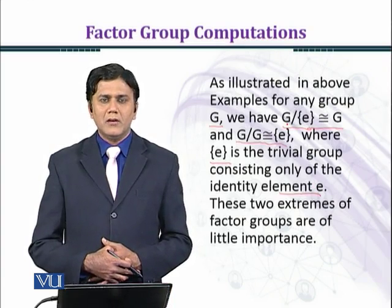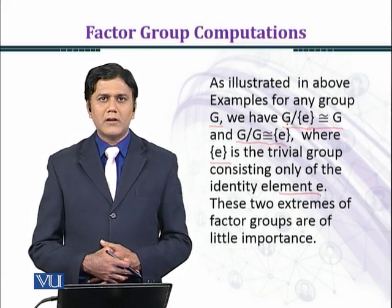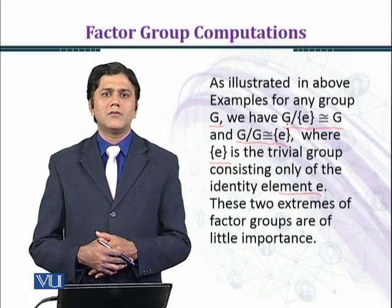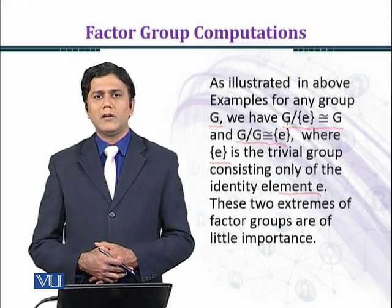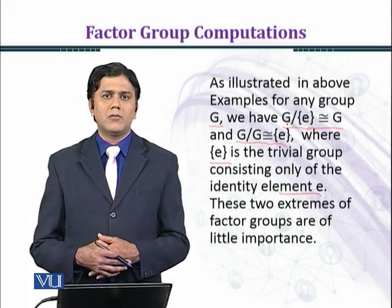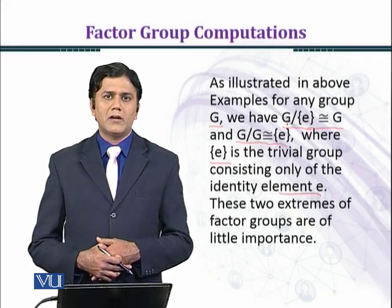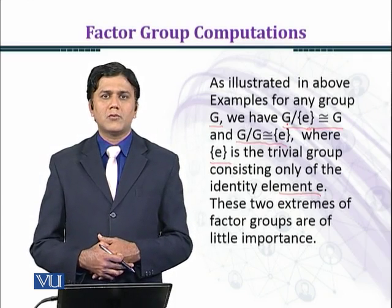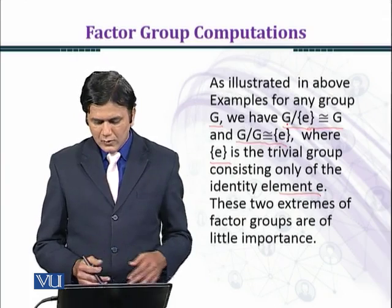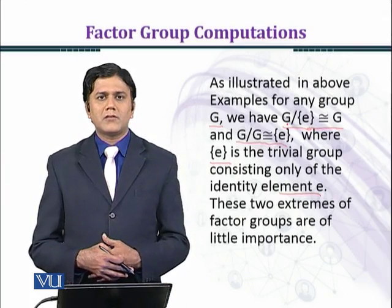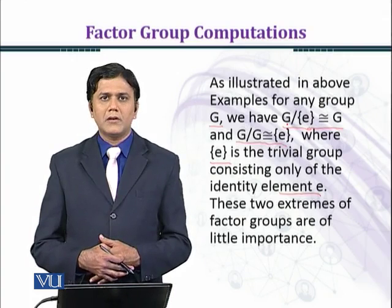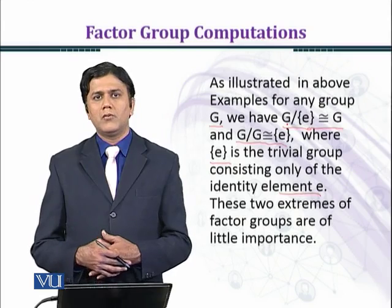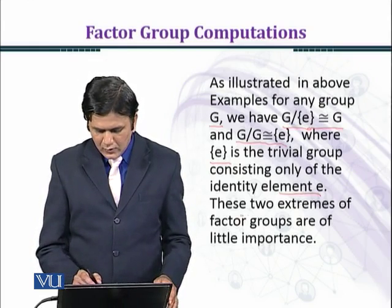جیسا کہ first example میں ہم نے دیکھا، set of integers کے اندر ہم singleton {0} کے ساتھ Z کا quotient لے رہے تھے اور ہر element جو ہے وہ co-sets کی form میں آ رہا تھا — تمام integers m، singleton {m} کی form میں co-sets بنا رہے تھے، where m ∈ ℤ۔ یہ تمام information trivial ہے۔